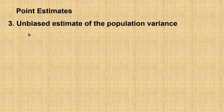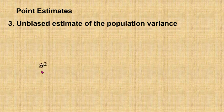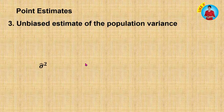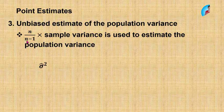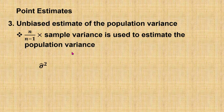Number three is the unbiased estimate of the population variance, which is denoted as sigma squared hat. However, to estimate the population variance, we don't use the sample variance directly. Instead, we use a value which is n divided by n minus 1, multiplied with the sample variance, and this value is used to estimate the population variance.